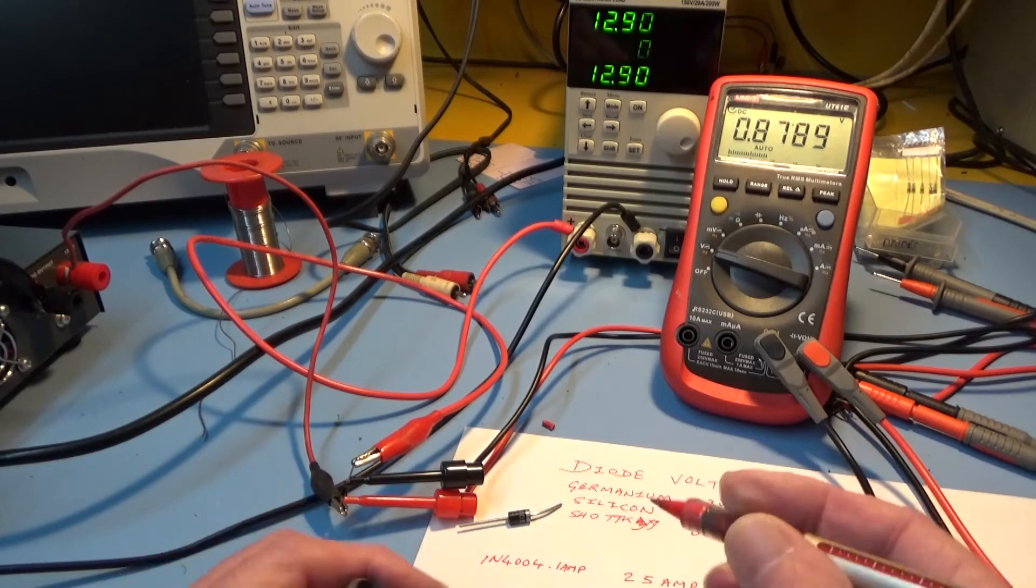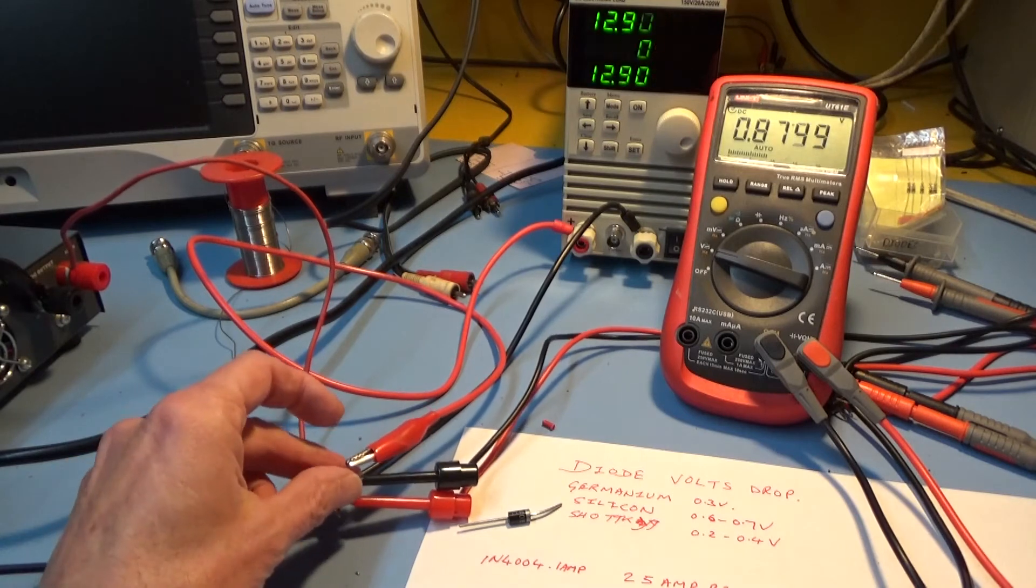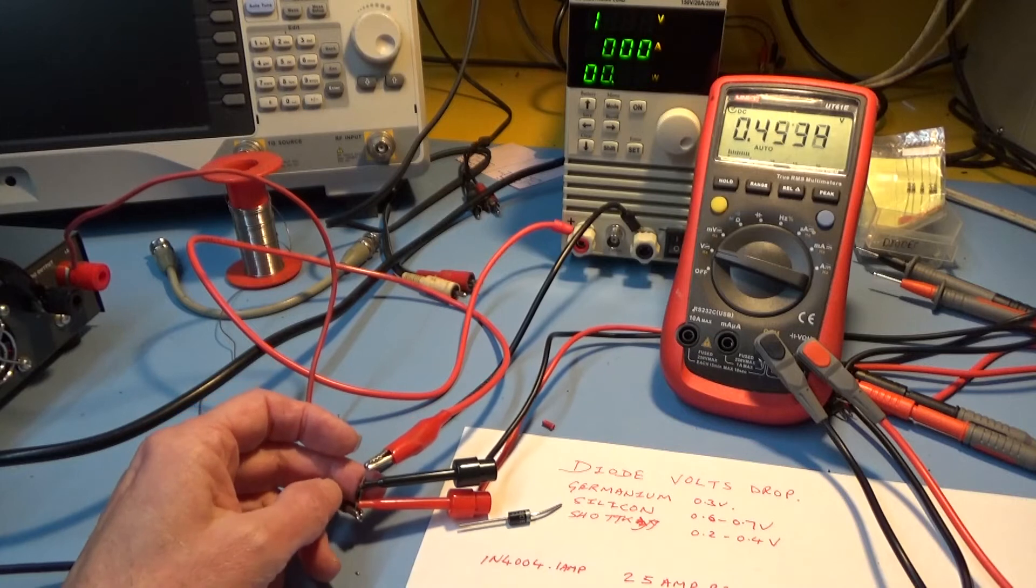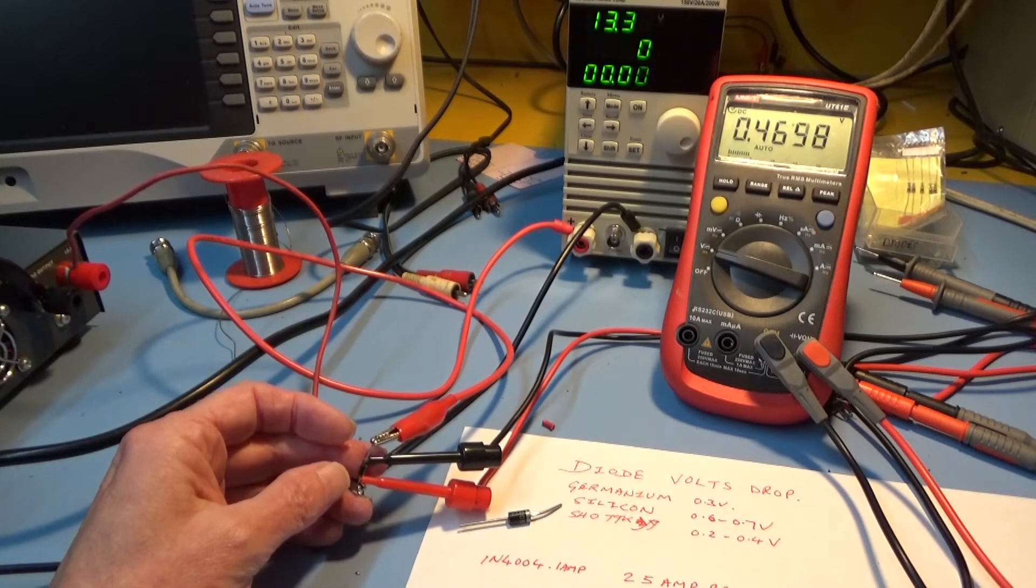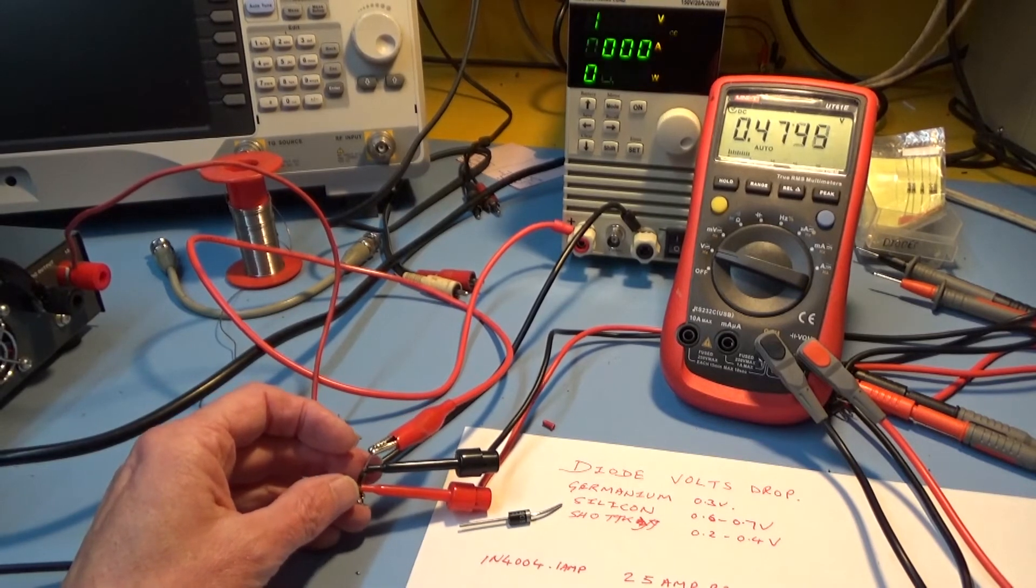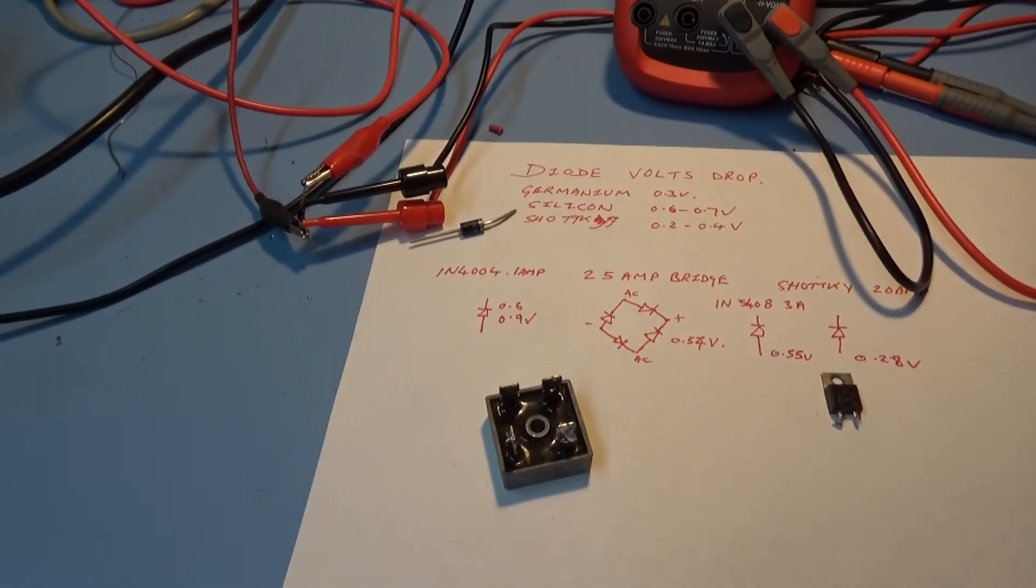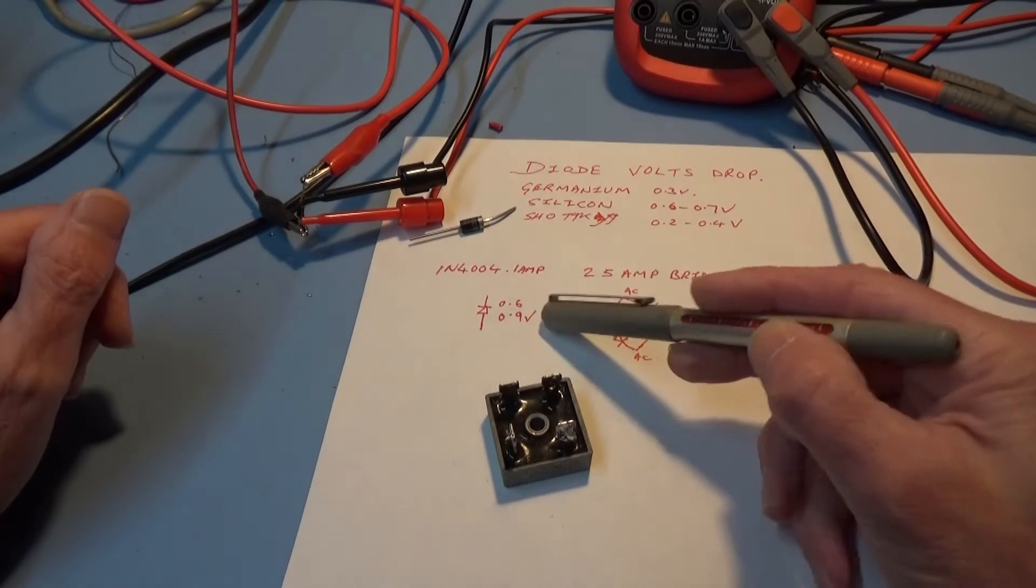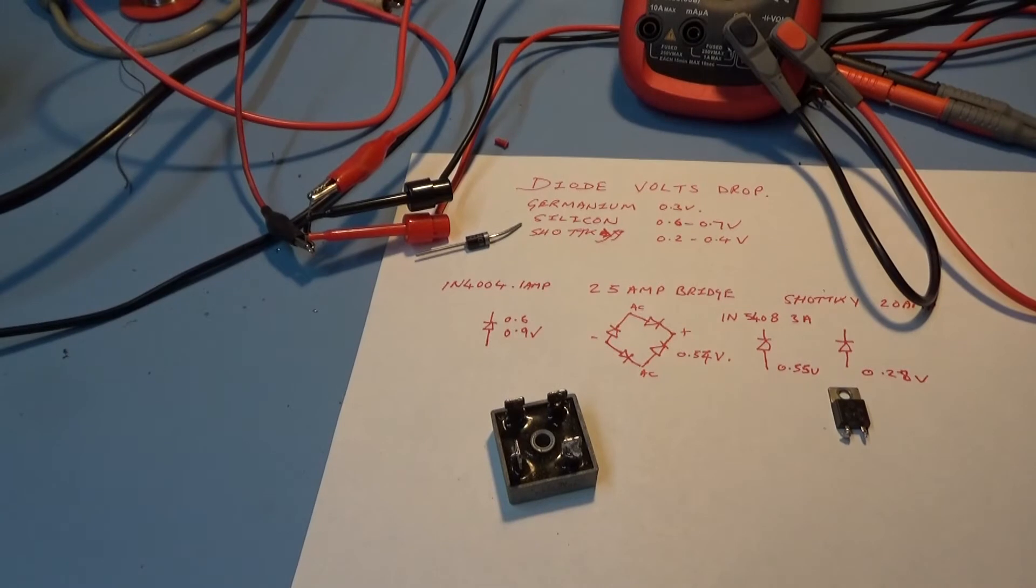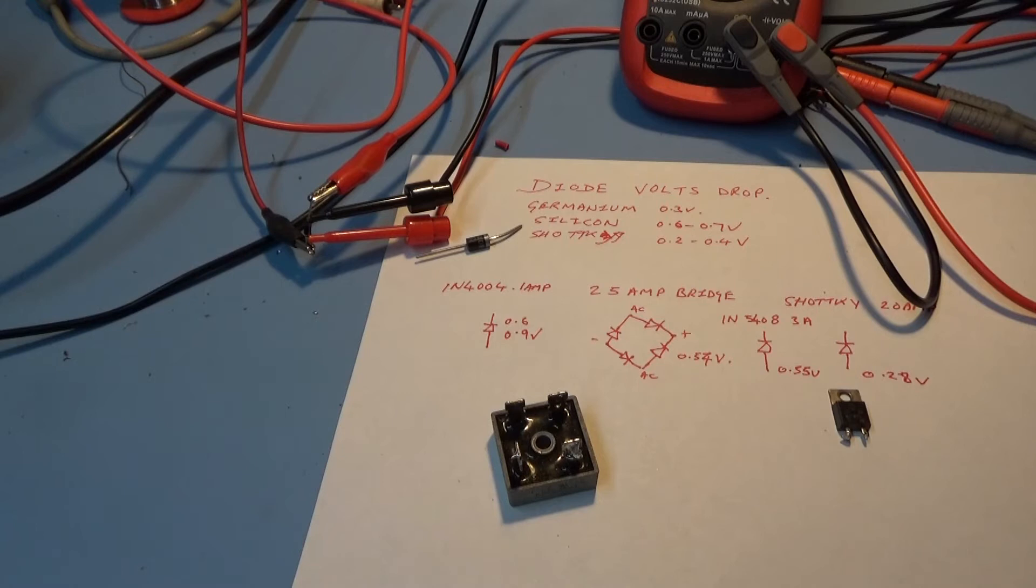0.9 volts, so that's quite a bit of difference between what we were measuring before. I have to turn off because that diode is not happy, it's getting rather warm. That shows you the difference, when you put an amp through a diode like that you had an extra 0.3 volts drop on it compared to the multimeter which is just using a test current of a milliamp or two.